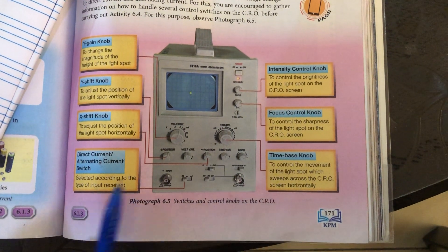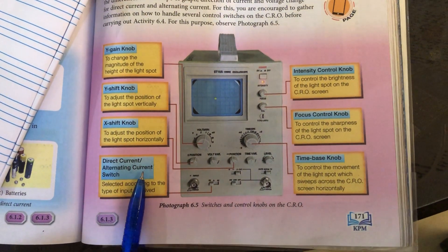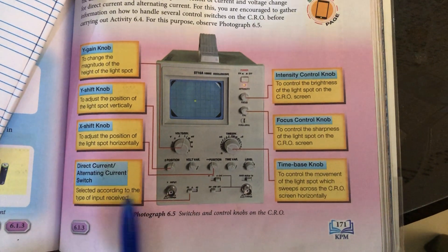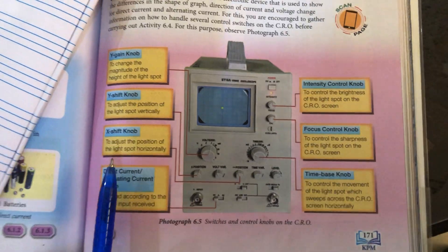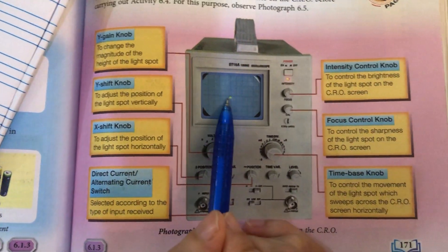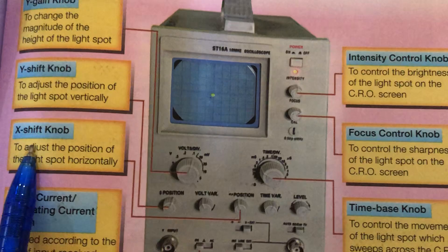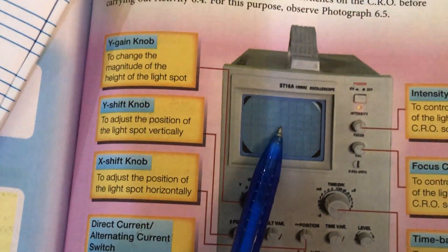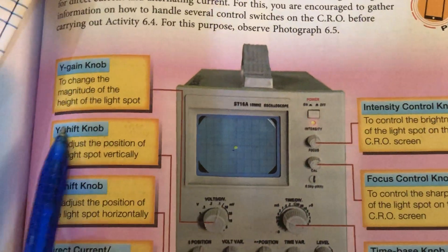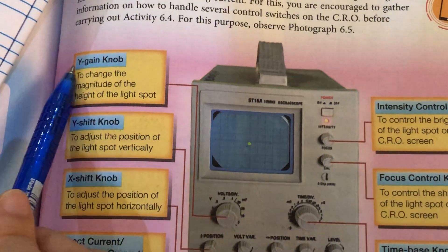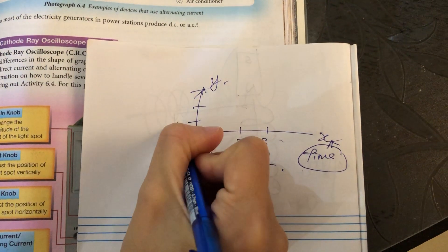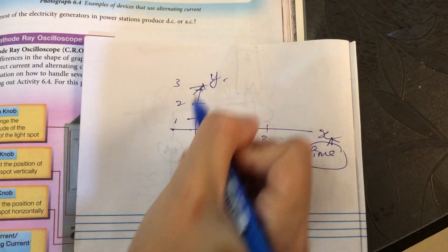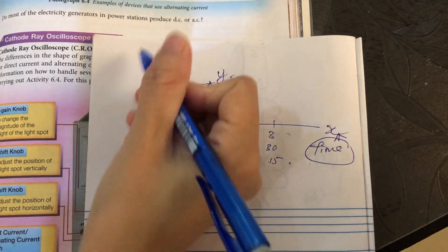We also have a direct current or alternating current switch to select which type of current you are connecting to. The x-shift knob adjusts the dot to move left and right, while the y-shift moves the dot up and down. The y-gain controls the scale on the y-axis — you can set it to 1, 2, 3 or 10, 20, 30, and so on, depending on the CRO settings.